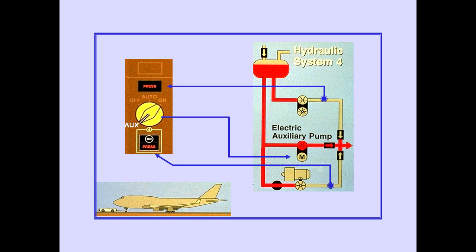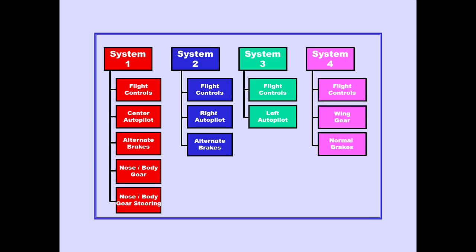The auxiliary pump is used only for ground operations. With the selector in the AUX position, the electric auxiliary pump operates when engine pump output pressure is low. The number four demand pump will not operate and the demand pump low-pressure light illuminates. This completes our discussion of the normal sources of hydraulic power for the four hydraulic systems.